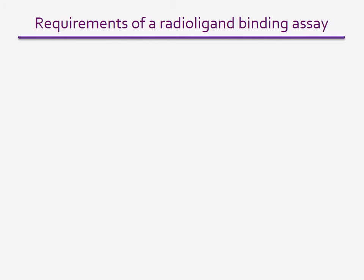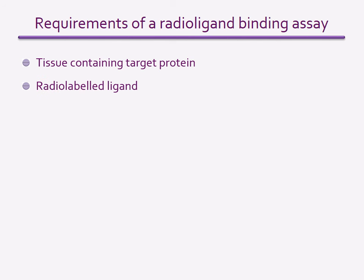In order to perform a radio ligand binding assay, a number of things need to be available. You need to have sufficient target protein to enable detection of binding, so you would choose a tissue or cells that show a high degree of expression of the target — for example, brain tissue for GABA receptors. A range of radio-labeled ligands are available commercially, but not for every compound or target, which can limit the types of targets you can study.